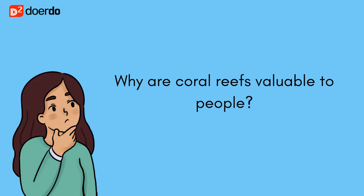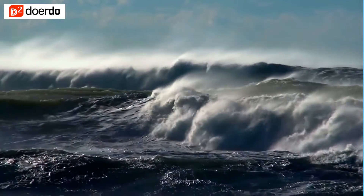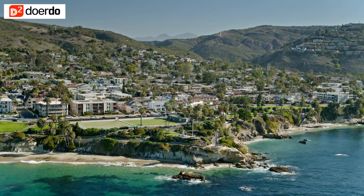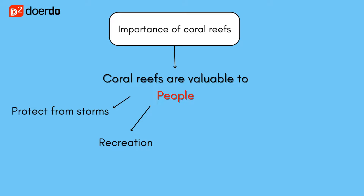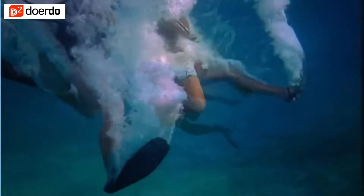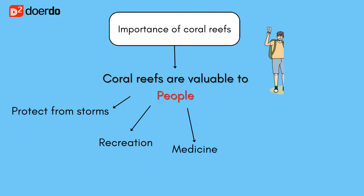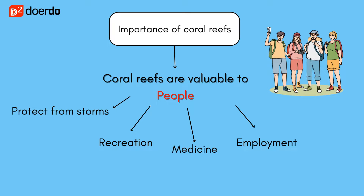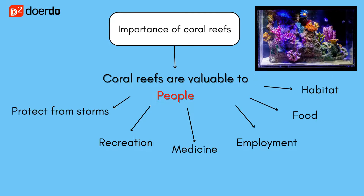Why are coral reefs valuable to people? Coral reefs provide protection from tropical storms — storm waves break over the reefs, reducing damage inland. Globally, more than 270 million people live along the coast. Reefs also provide recreational activities like diving, snorkeling, and free diving. Corals are being used in cancer and virus research. They provide employment in tourism. Fish is fast becoming a more popular source of lean protein in the diet. Coral reefs serve as nurseries for 90% of all fish, costing an estimated 100 million US dollars.